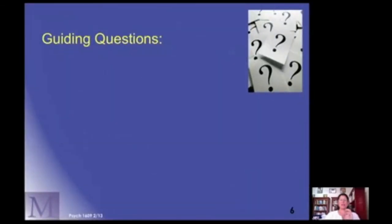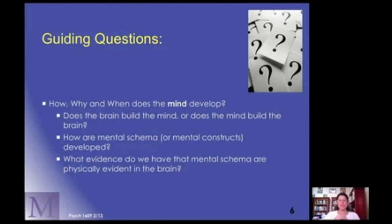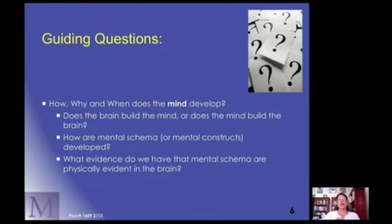In this view, I'd like you to think about these things as we go through these first few slides. The main question in this first topic is: how and why and when does the mind develop? Does the brain build the mind, or does the mind build the brain? I'm sure you've already been thinking about that for the past couple of weeks. How do our mental schemes or mental constructs develop? How do we understand red, or how do we understand that math might be a different way of thinking than thinking about literature? And what evidence do we have that mental schema are physically evident in the brain? I hope you actually dig more deeply into this in your sections this week as well.